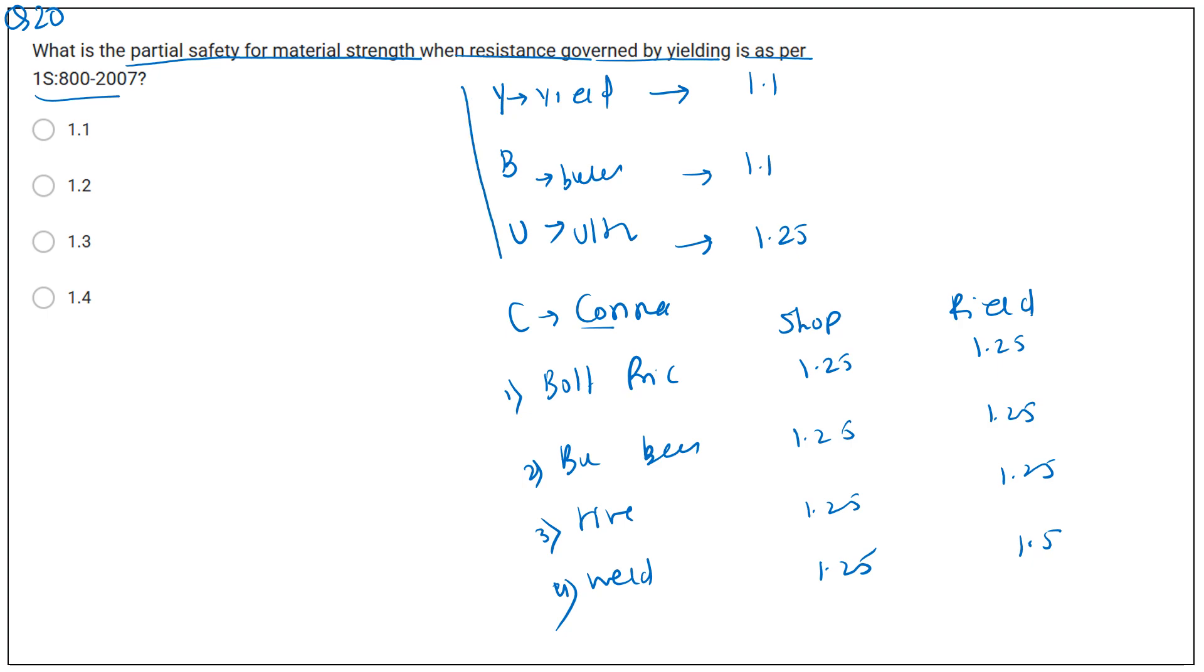How to remember that? In the first column, three things are there, which is Y, B, U. Yield, Buckling, and Ultimate Stress, values are 1.1, 1.1, and 1.25. In the next section, connection is there. In connection, four sections are there. First one is friction, then bearing, rivet, and weld. In the four sections, two separate sections are there for shop and field. In case of shop, values are 1.25. In case of field, values are 1.25. Except weld. In case of weld, the value is 1.5. So, in this question, the answer for the resistance governed by yielding is nothing but 1.1. So, first option is correct here.